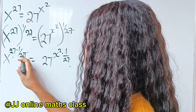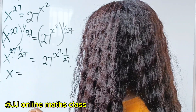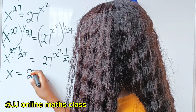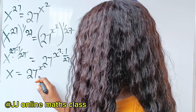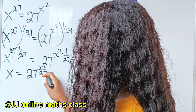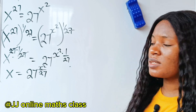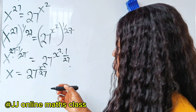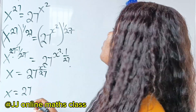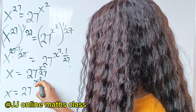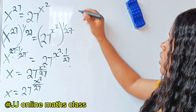This will now divide this, and we have that x is equal to 27 to the power of x squared multiplied by 1, which gives us x squared divided by 27. So we now have that x is equal to 27 raised to the power of x squared divided by 27.